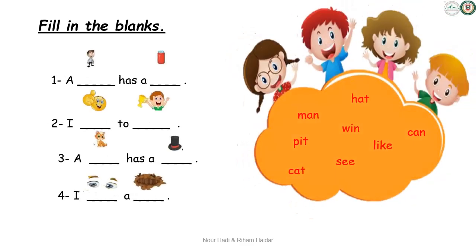Look, my dear. Here are Hadi and Noor and their friends. They want you to help them with this exercise — fill in the blanks. They have a cloud of different word families. You can use these words to fill in the blanks. Are you ready? Let's get started. Sentence number one: look at the picture in the sentence to help you fill in the blank with the correct word. A man has a — look at the picture — can. Nice. A man has a can.